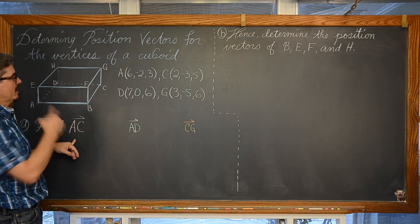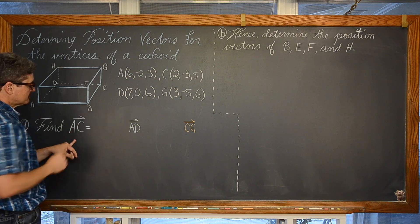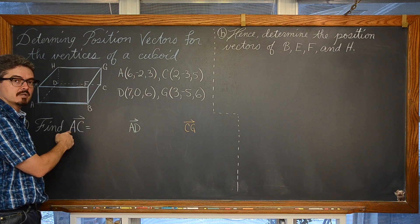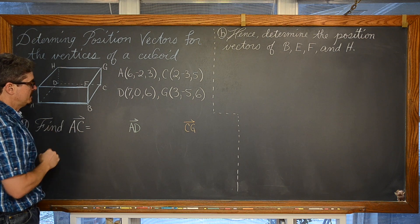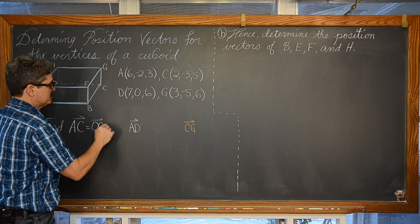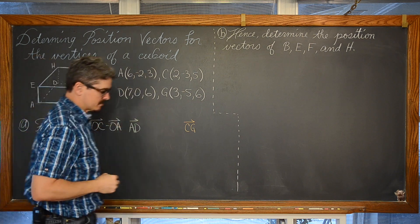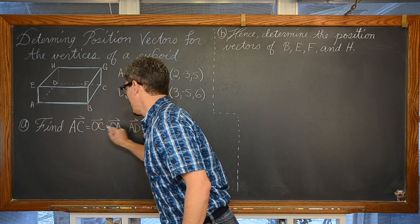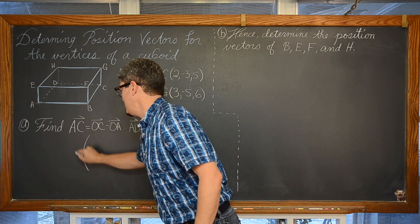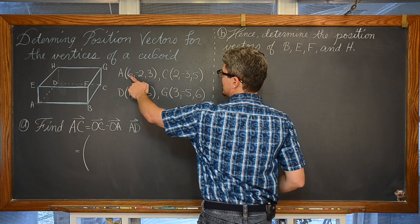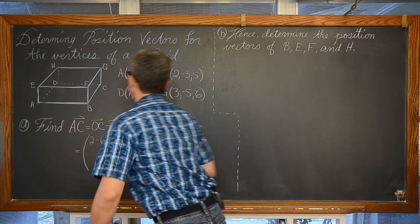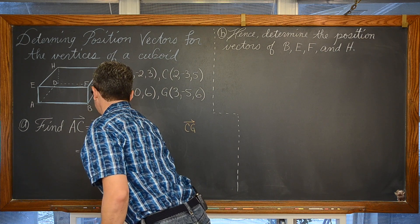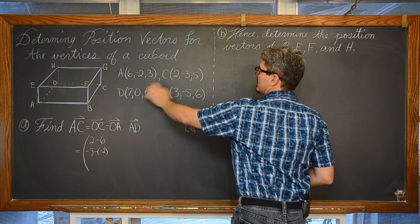We are first going to find vector AC. That means we are going to be doing the terminal point, each of the components of the terminal point minus each of the corresponding components of the initial point. So vector AC is going to be the result of doing the position vector OC minus the position vector for the coordinate of A. AC is going to be equal to 2 minus 6, subtracting the x components, now the y components, negative 3 minus negative 2, and the z components, 5 minus 3.